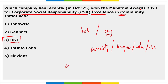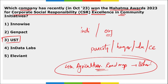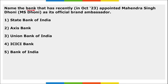Who launched the fourth agriculture roadmap of Bihar? It was launched by the President of India, Draupadi Murmu. State Bank of India has appointed Mahendra Singh Dhoni as their official brand ambassador.